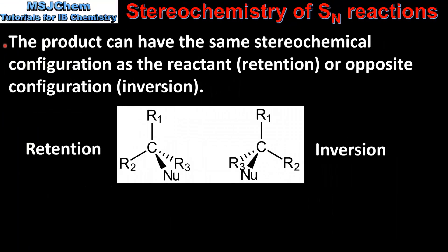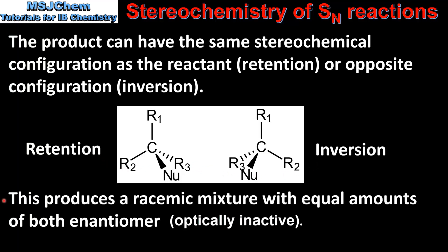The product can have the same stereochemical configuration as the reactant, which is known as retention of stereochemistry, or the opposite configuration, which is known as inversion of the stereochemistry. Here we have the two products: the one on the left shows retention, the one on the right shows inversion. Because of the 50% of each product, this produces a racemic mixture with equal amounts of both enantiomers, which means that overall it is optically inactive.